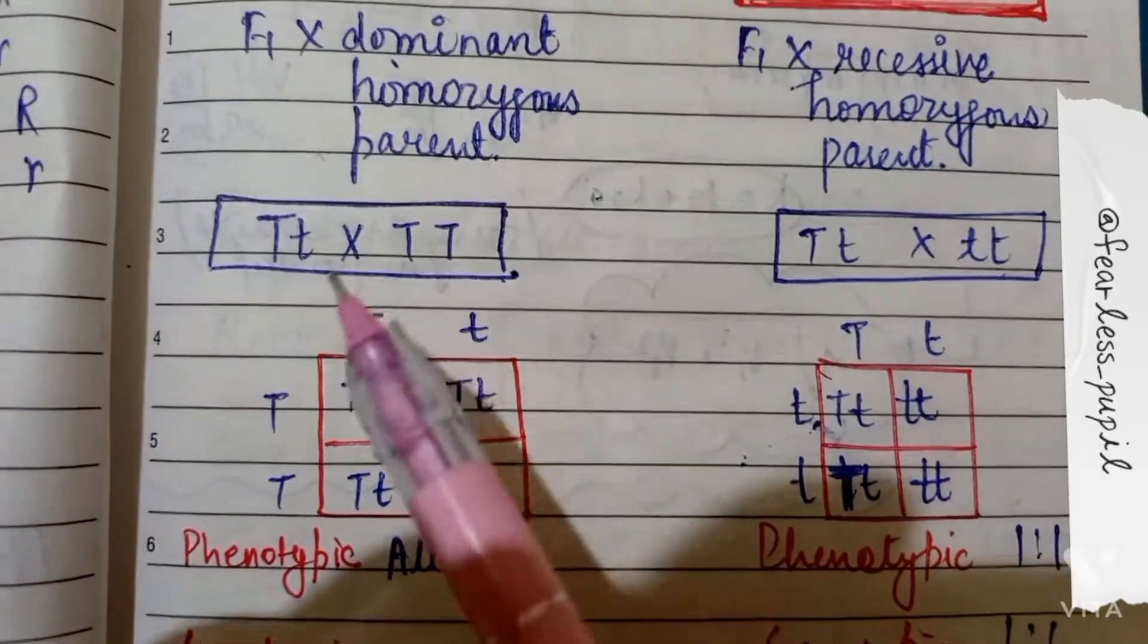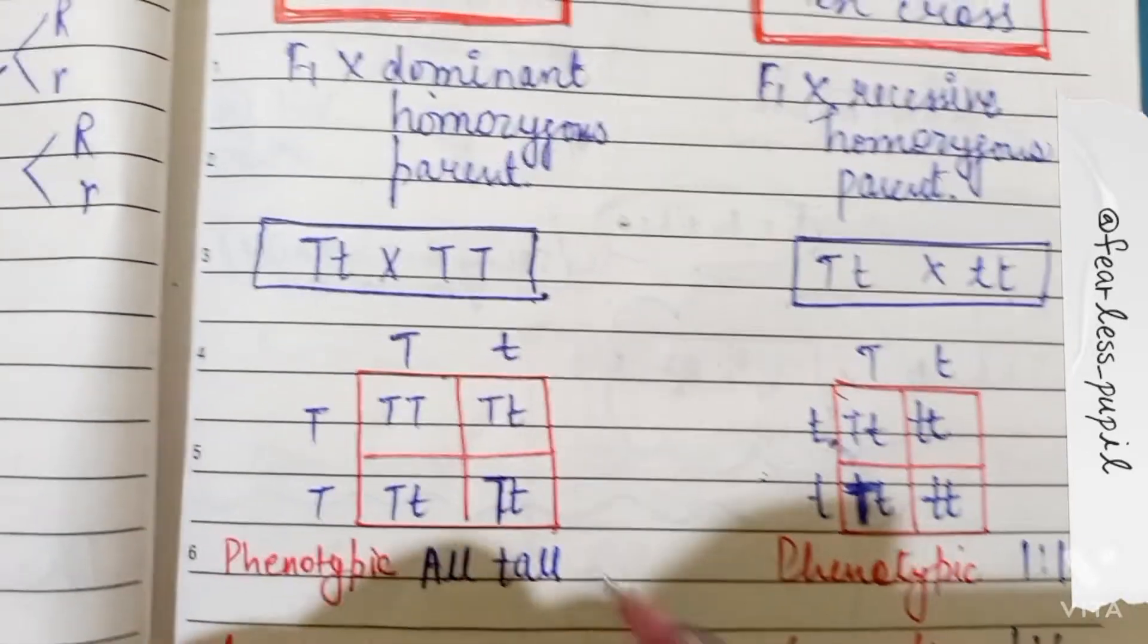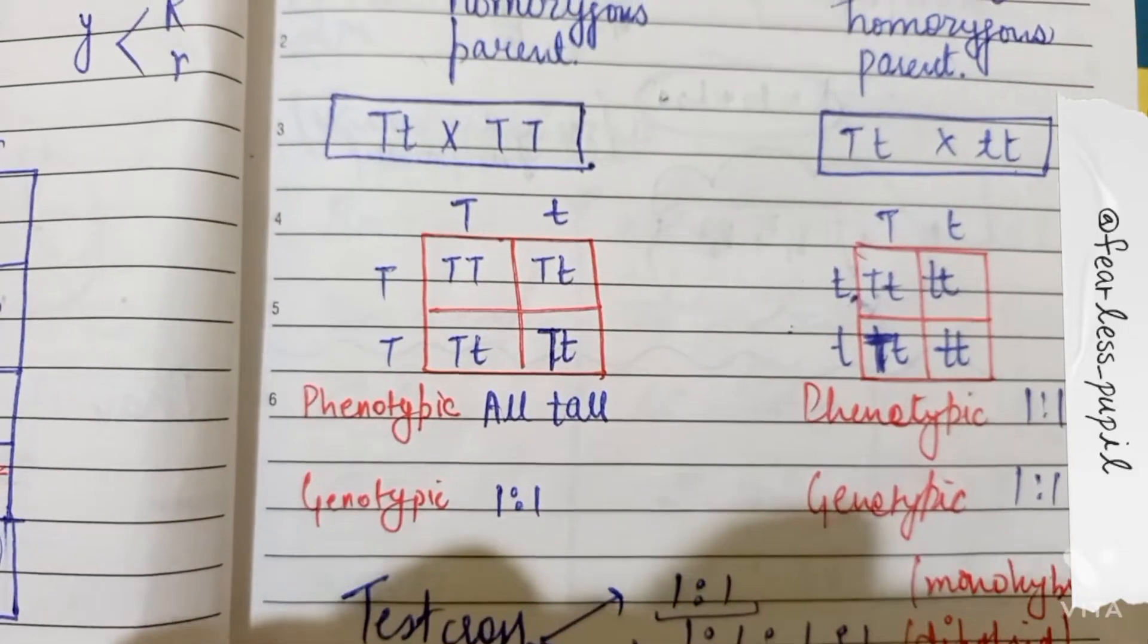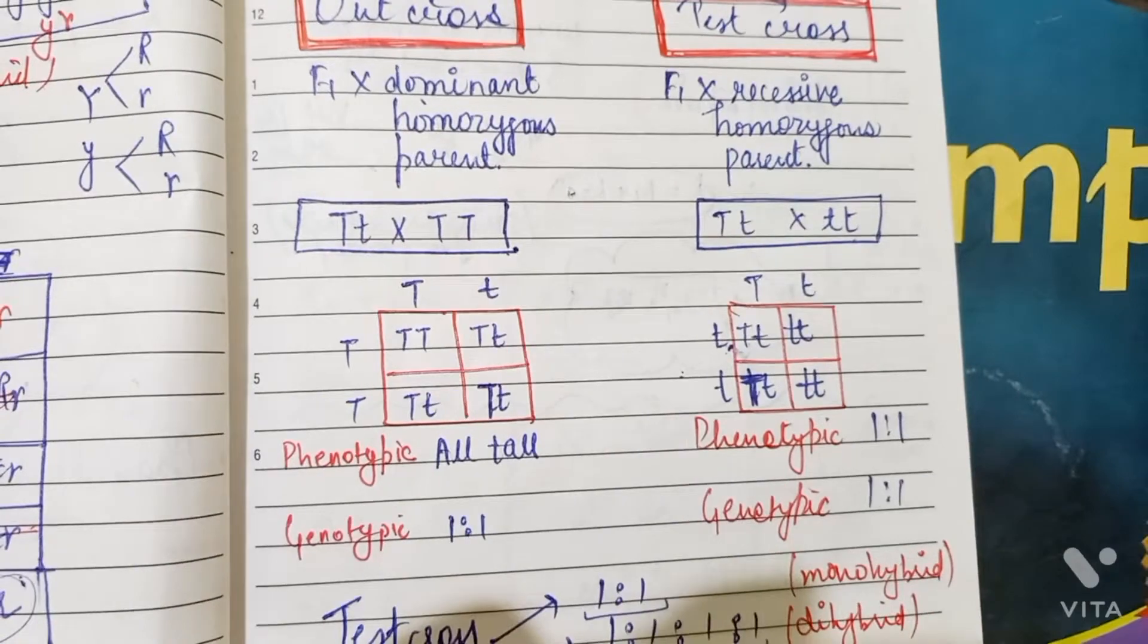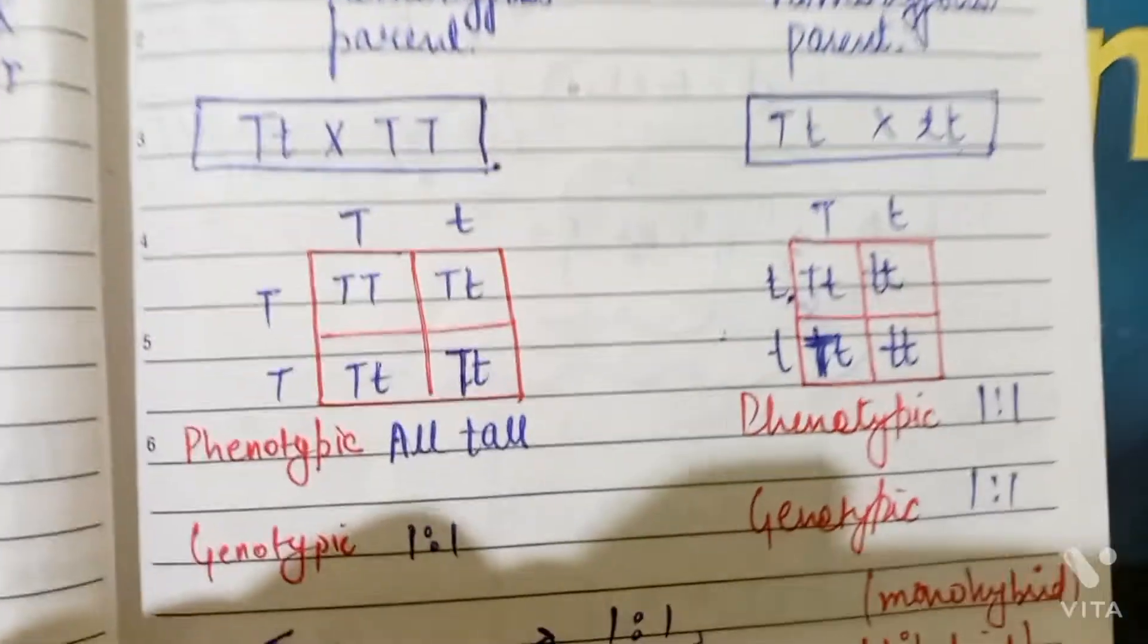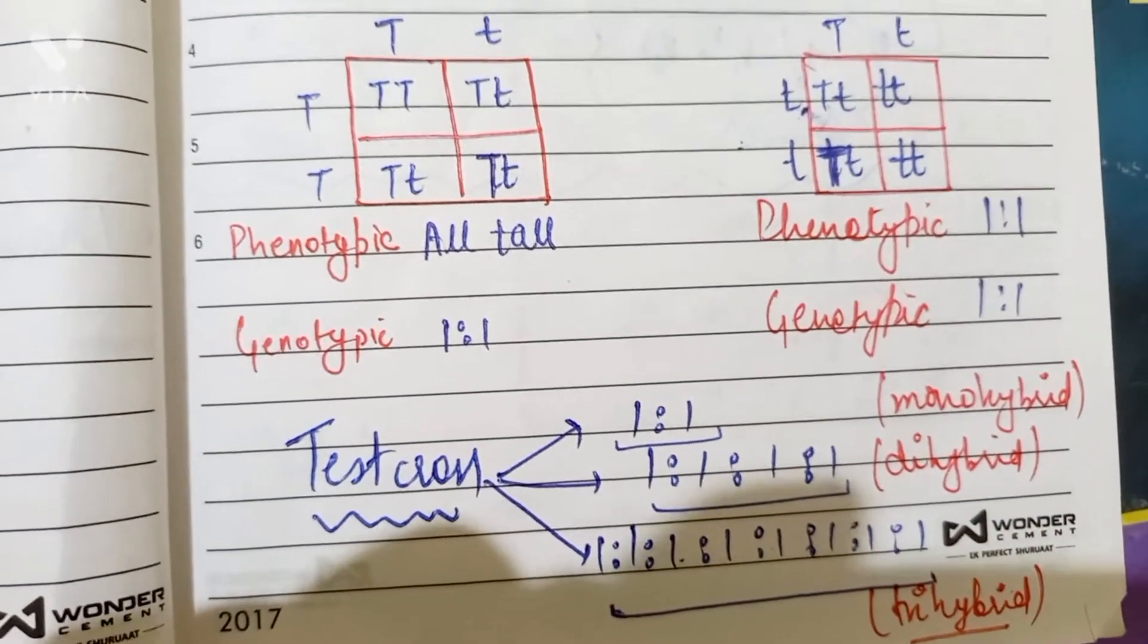Here you can see the ratios are like this. The ratios are 1 is to 1 and 1 is to 1. This means either we do testcross or we do outcross, the values are always in the ratio 1 is to 1.